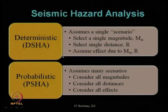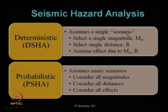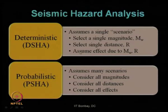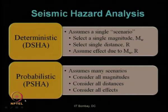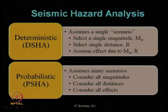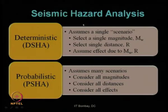We have seen a comparison: in DSHA we consider the single scenario which is the worst case scenario always. It is based on the single value of magnitude which is M_max, based on the single distance which is R_minimum, and the combination of these two — maximum magnitude and minimum distance — gives us the hazard parameter. Whereas in PSHA we need to consider various scenarios: all magnitudes, all distances, and all the effects to obtain the hazard parameters and consider the uncertainty involved in this process.